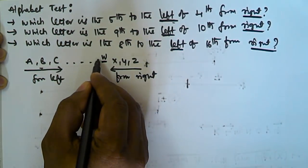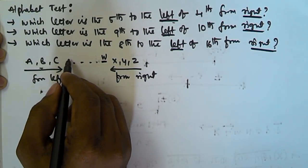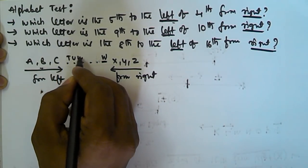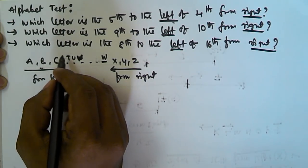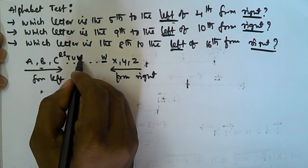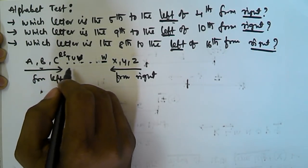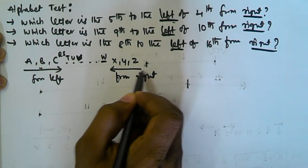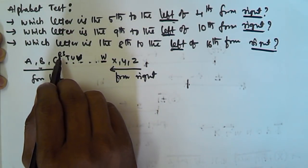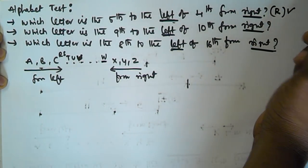The fourth from the right is W. Now we need the fifth to the left of W. So counting left from W: one, two, three, four, five — that gives us R. So fifth to the left of the fourth from the right is R.